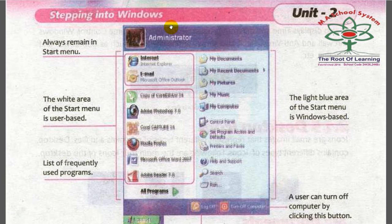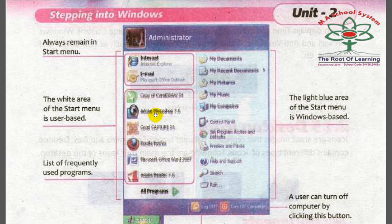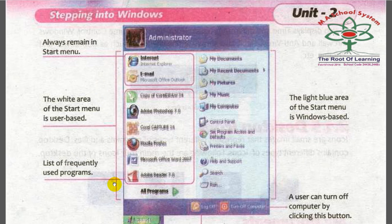When we click on the Start button, a list opens. Internet and email always remain in the Start menu. The white area of the Start menu is user-based and shows a list of frequently used programs.